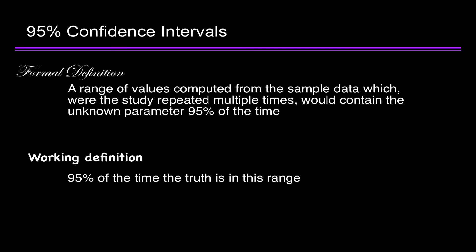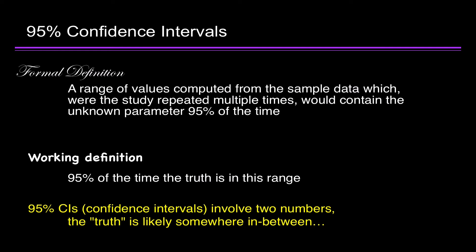Now the working definition is 95% of the time the truth is in this range. 95% confidence intervals involve two numbers, and the truth is likely somewhere in between.